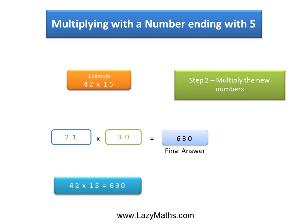But because multiplying 21 times 30 is relatively easy than multiplying 42 times 15, we can quickly get to the answer of 630 by multiplying 21 times 30 instead of multiplying 42 times 15.